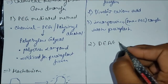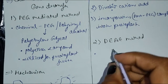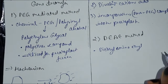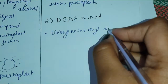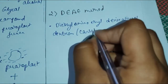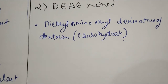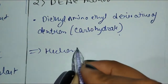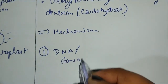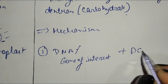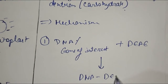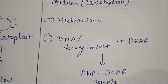The second chemical method is the DEAE method. DEAE stands for diethylaminoethyl. It is a derivative of dextran, which is a carbohydrate. In its mechanism, the first step is to chemically treat our DNA particle or gene of interest. After chemical treatment, a DNA-DEAE complex is generated.